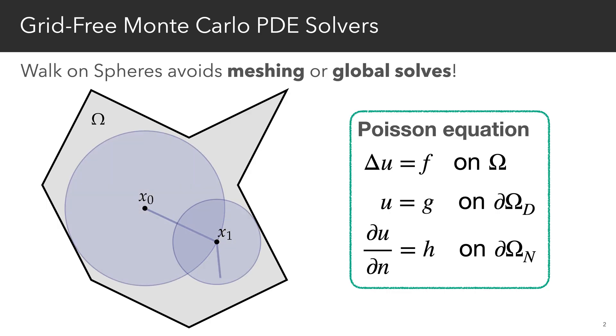Walk-on spheres and related techniques such as walk-on stars or the walk-on boundary method solve elliptic PDEs such as the Poisson equation, and crucially, like ray tracing,